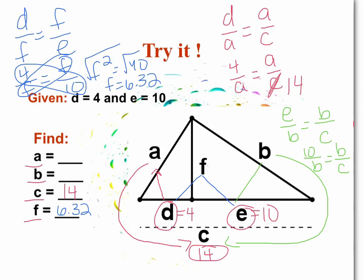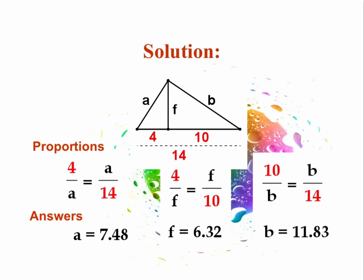The last part, which you will have to do on your own, is solving for B using E over B equals B over C. You can substitute 14 for C and solve that proportion on your own. The answers will be on the next slide. Here are your solutions and proportions along with your answers — you should have been solving for A and for B on your own. We'll see you in class and practice some more of these problems together.